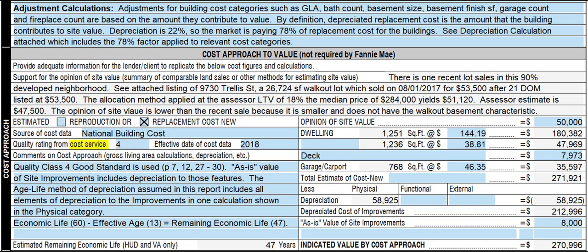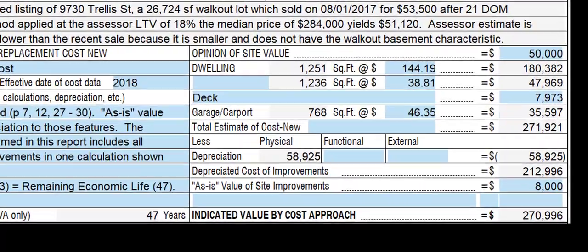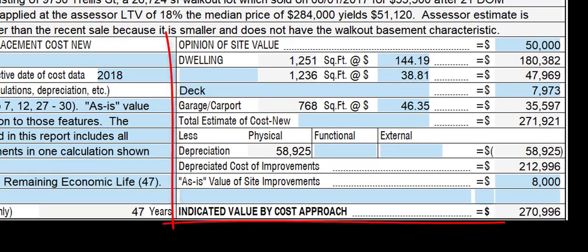We license cost data from National Building Cost and use the data to calculate numbers for the cost approach and automate the depreciated cost method of developing sales grid adjustments.